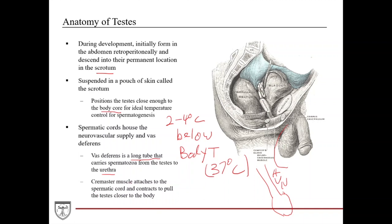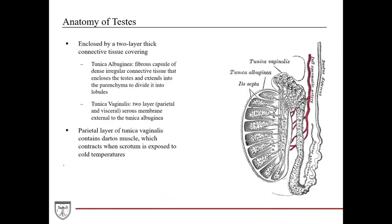The cremaster muscle attaches to the spermatic cord and contracts to pull the testes closer to the body for temperature control, to achieve the ideal temperature for spermatogenesis. The testes are enclosed in a two-layer thick connective tissue covering. The first layer is the tunica albuginea, which is the innermost layer. Outside of that is the tunica vaginalis. The tunica albuginea is a very fibrous dense layer consisting of dense irregular connective tissue, and it encloses the testes and extends into the parenchyma to divide it up into lobules.